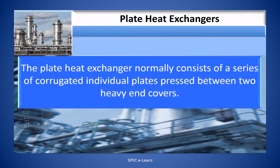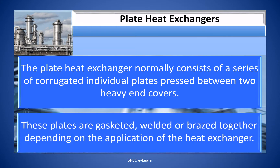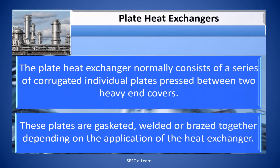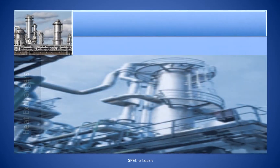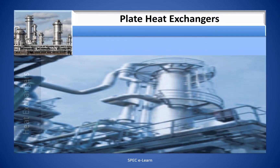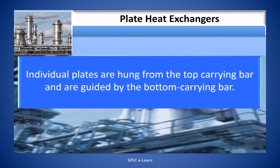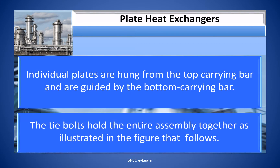The plate heat exchanger normally consists of a series of corrugated individual plates pressed between two heavy end covers. These plates are gasketed, welded, or brazed together depending on the application of the heat exchanger. These plates are hung from the top carrying bar and are guided by the bottom carrying bar. The tie bolts hold the entire assembly together as illustrated in the figure.